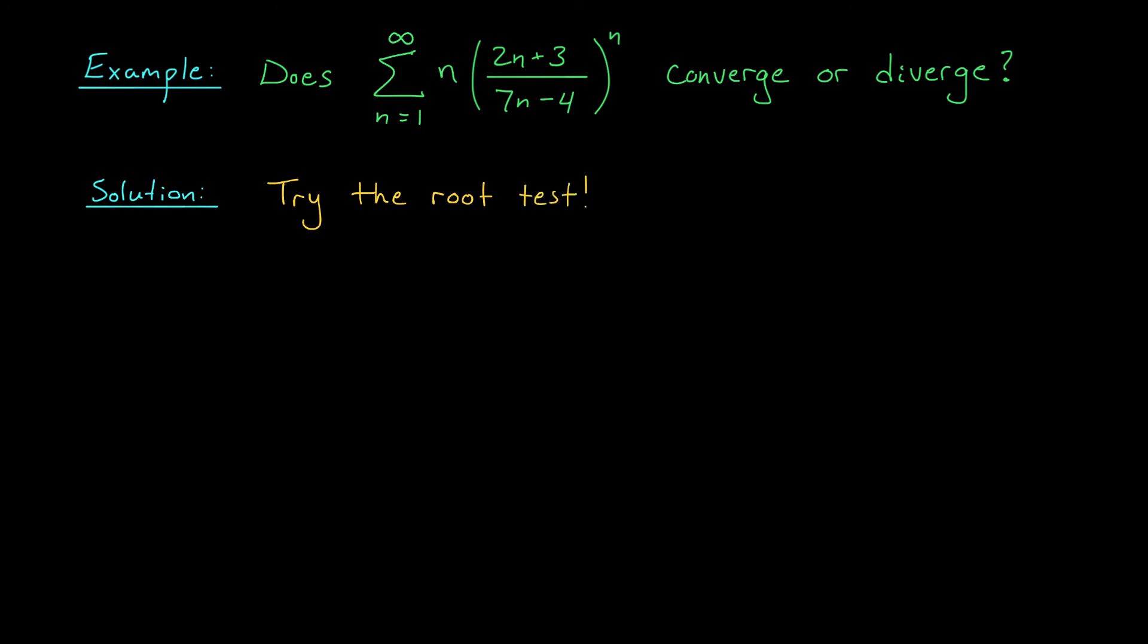To apply the root test, I compute the limit as n goes to infinity of the nth root of |aₙ|. In this case, that's the limit as n goes to infinity of the nth root of n·(2n+3)/(7n-4) to the power of n. Everything is positive, so I can drop the absolute value bars. Breaking up the nth root, I have the nth root of n, and then the nth root of the expression. But the root and the exponent cancel. This is why the root test is so useful—I'm just left with (2n+3)/(7n-4).